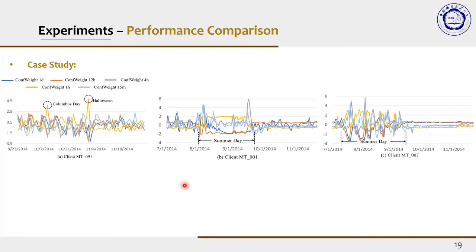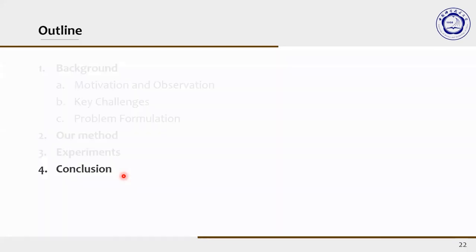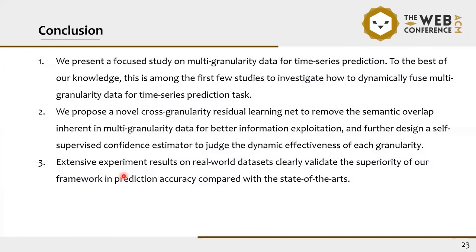To intuitively explore the effectiveness of the confidence estimation mechanism, we extract the changes in confidence weights of some clients in the electricity dataset. We make a conclusion that first we present a focused study on multi-granularity data for time series prediction task. We propose a novel cross-granularity residual learning net to remove the semantic overlap inherent in multi-granularity data for better information exploration. The experiment results on real-world datasets clearly validate the superiority of our framework in prediction accuracy compared with state-of-the-art methods. Thank you.